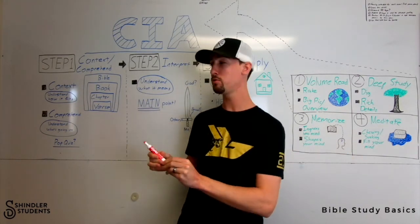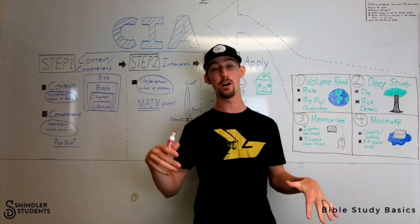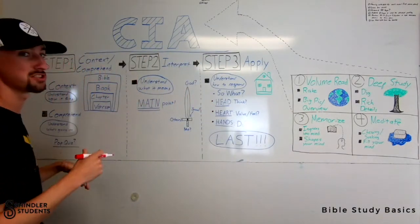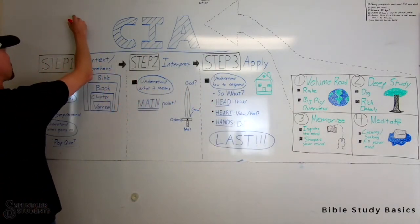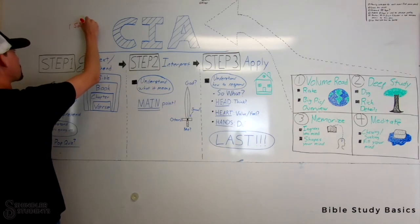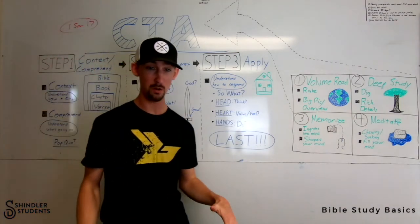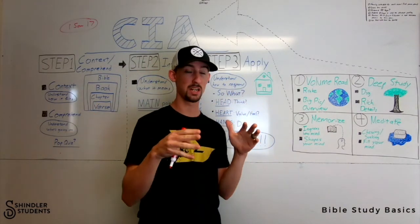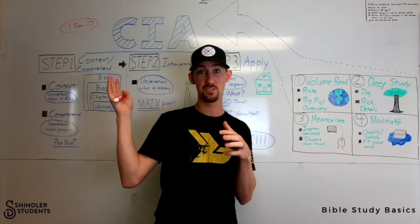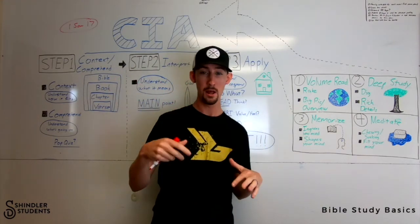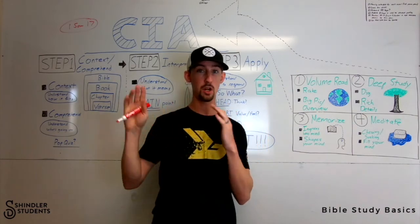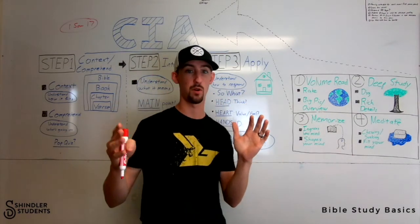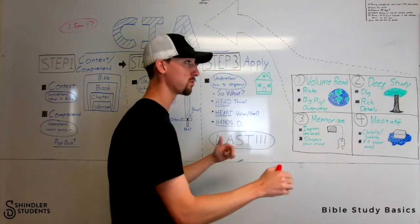Today we're going to walk through two passages using all this information. The first one is 1 Samuel 17 — that's a whole chapter in the Old Testament from a narrative book. 1 Samuel is a narrative book, which means it's storytelling. We're going to go through it as though it's part of your volume reading, so we'll pretend you're in a volume reading plan and come to 1 Samuel 17.